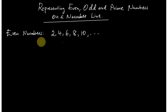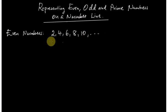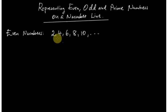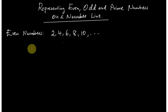We are representing even numbers on the number line. Even numbers are 2, 4, 6, 8, 10, etc. We don't consider the negative part. Even numbers originate from natural numbers or counting numbers, so there are no negative even numbers. A natural number which is divisible by two is what we call an even number.